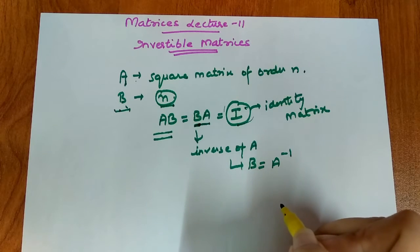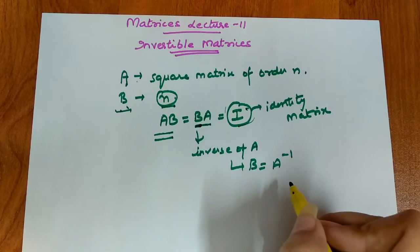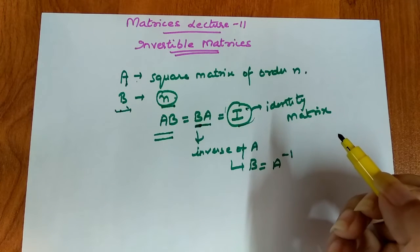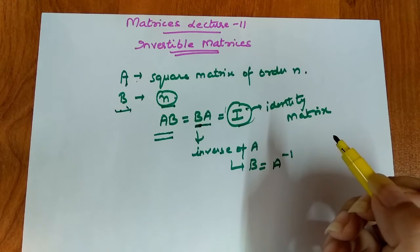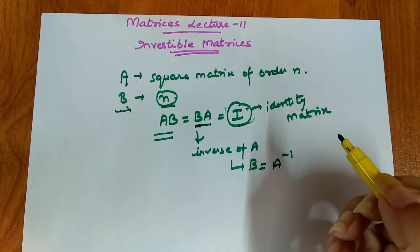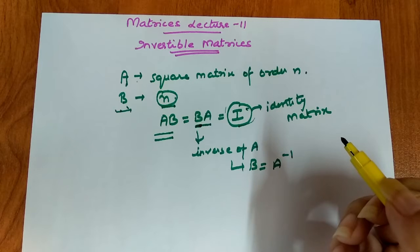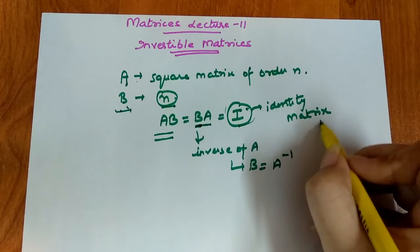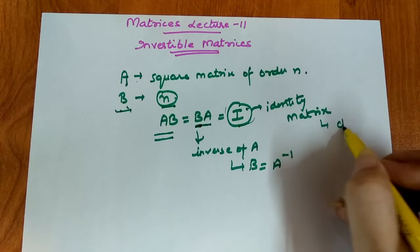You will know easily what is an identity matrix. We have already covered this in the last lecture when we understood types of matrices. If you don't know, you can quickly see that video. Here I will tell you that basically, an identity matrix has diagonal elements equal to one.